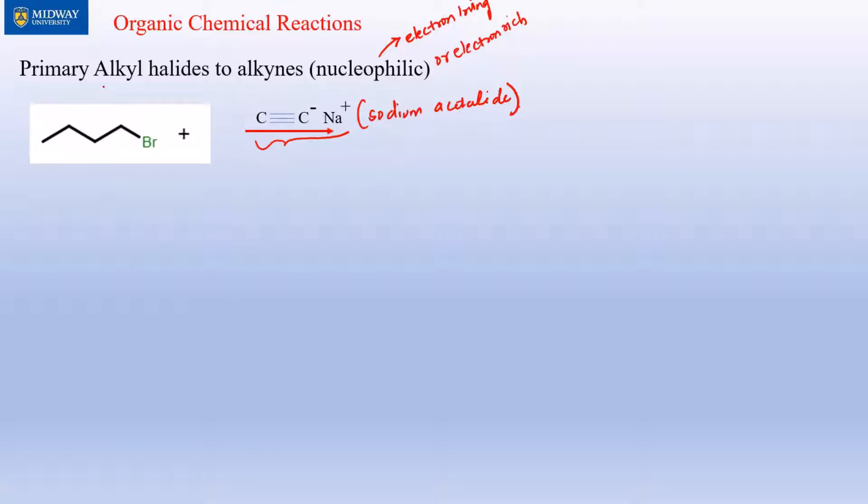We're starting with an alkyl halide and we're going to convert that to an alkyne. Basically all you're going to do is write everything that you start with. This is why it's important you put dots on the carbon so you know where your carbon ends. This is not a carbon, this is just a bond. This would have been 1-bromobutane.